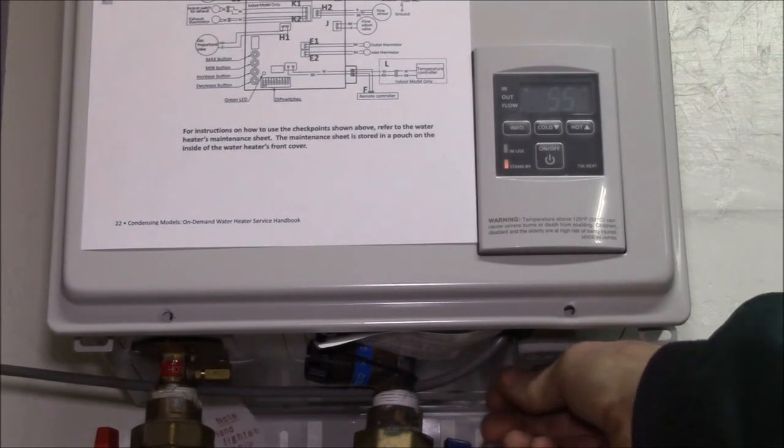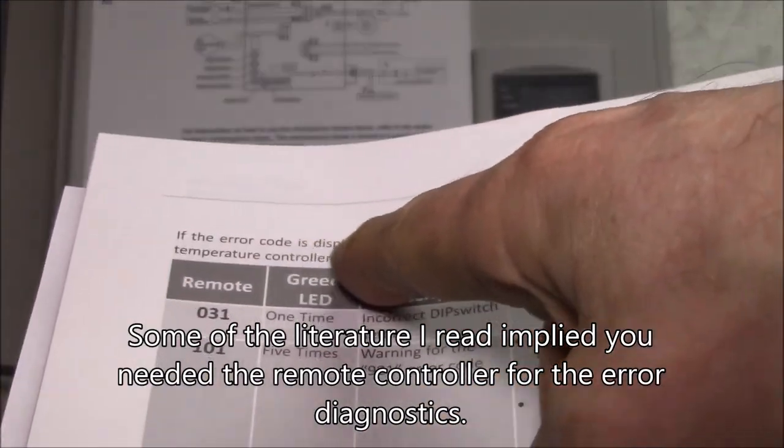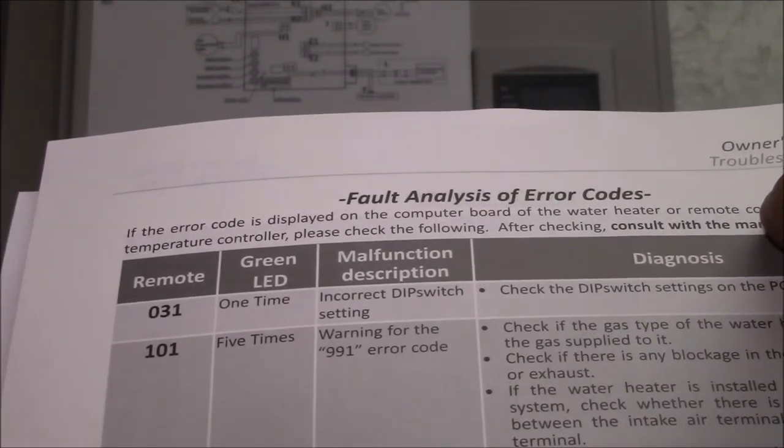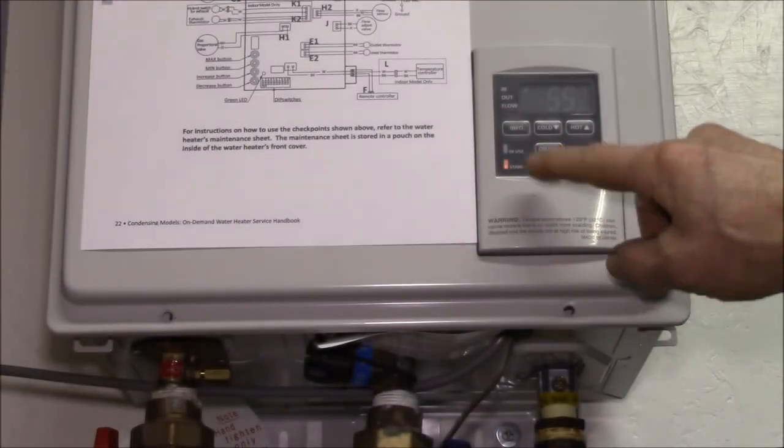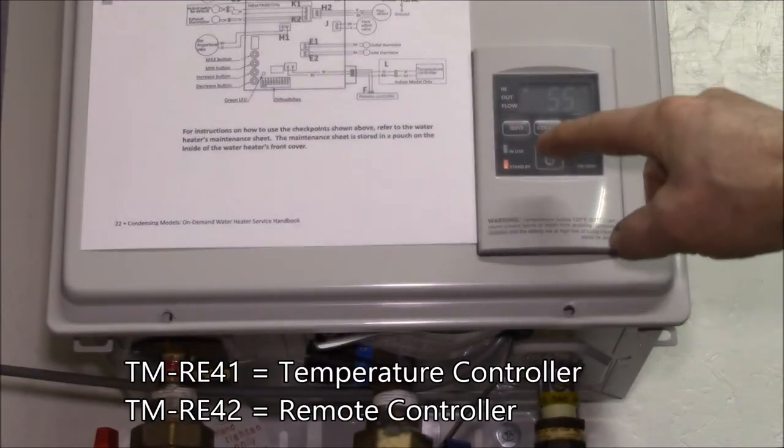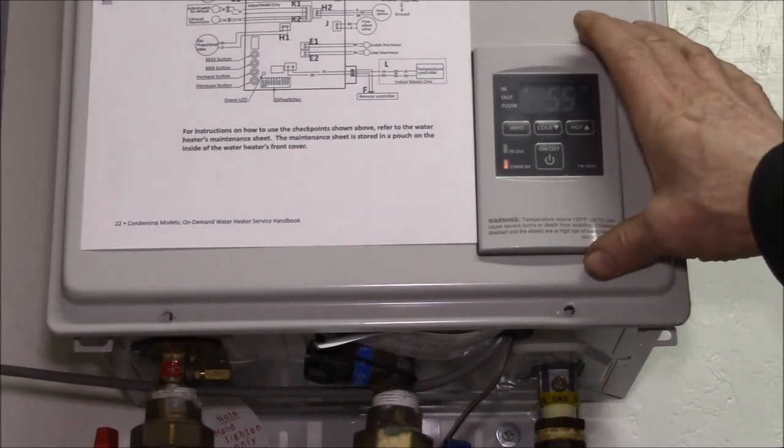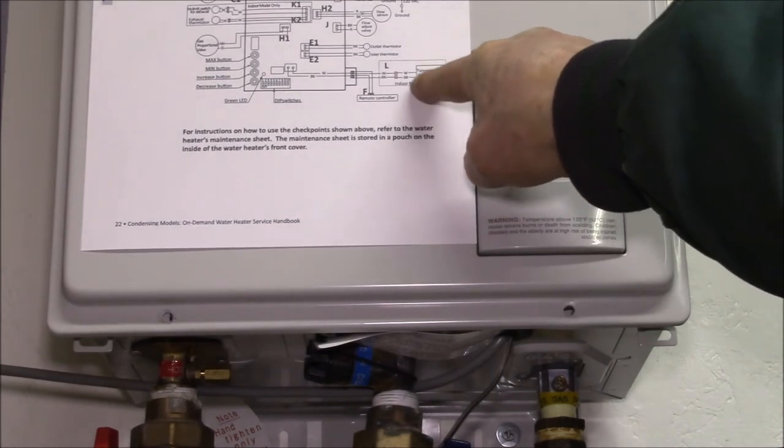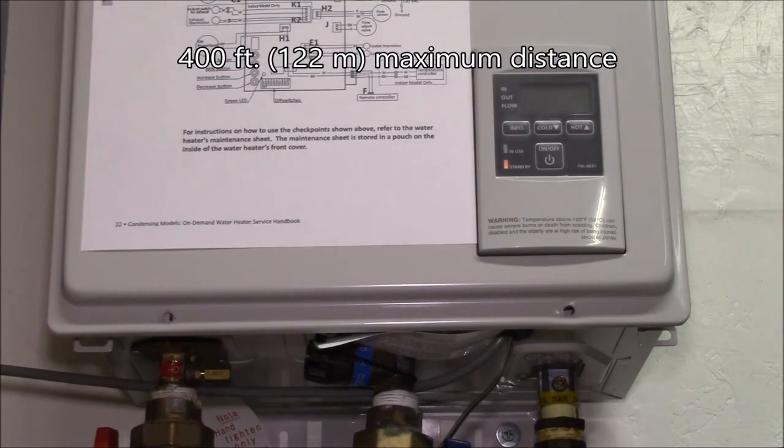It says here that the error code is displayed on the computer board of the water heater or the remote controller or the temperature controller. I think this is called the temperature controller and the remote unit is the remote controller. It looks like it'd be pretty easy to take this temperature controller and move it up to a couple hundred feet away from the heater, so you could put this in a bathroom.